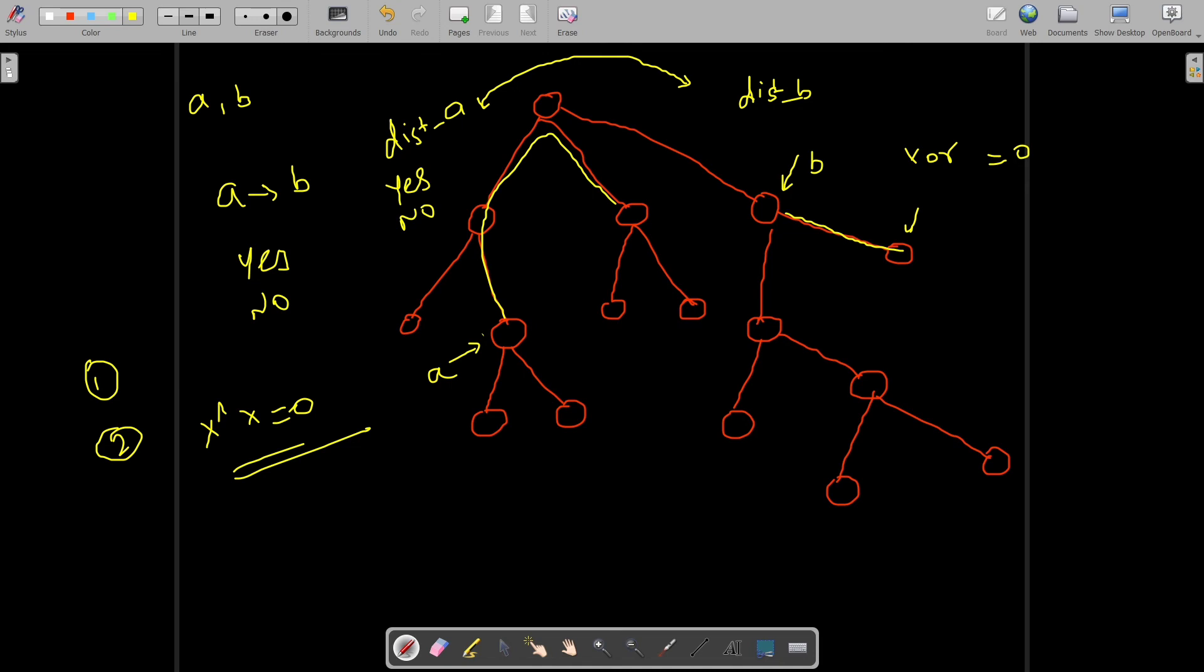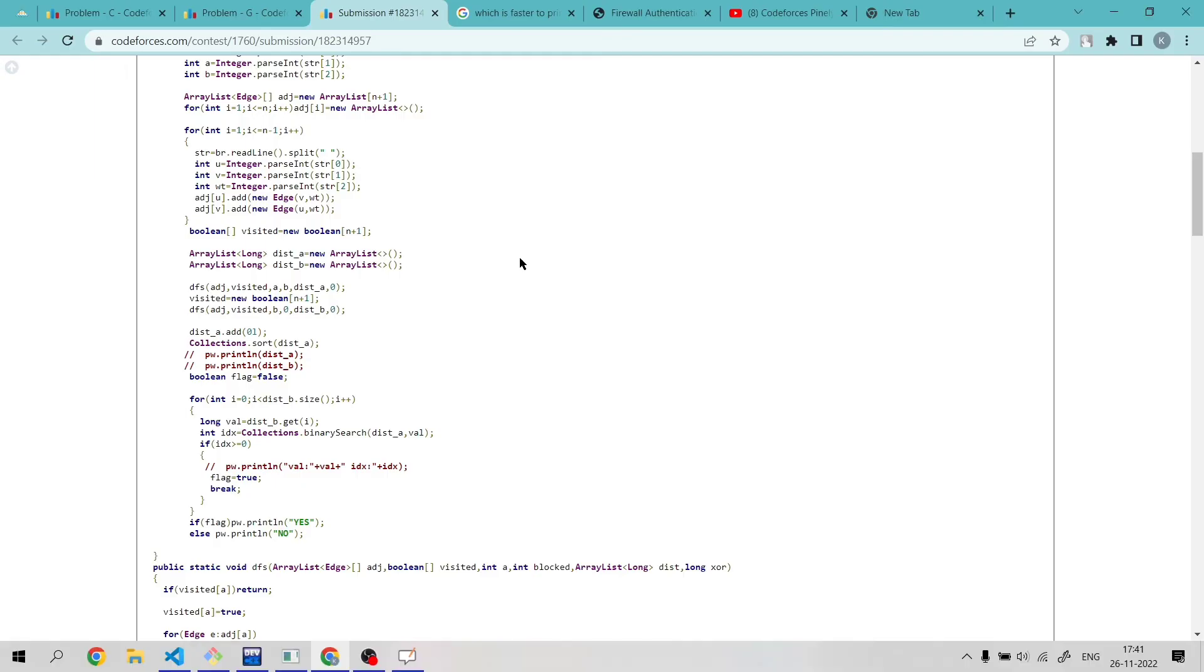There can be a possibility that I started a DFS from B and it reached to vertex A directly in such a way that XOR becomes 0. So to handle this case, I have added 0 in distance A array list.